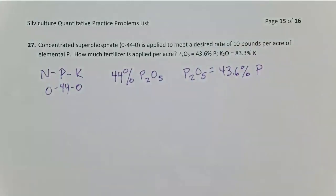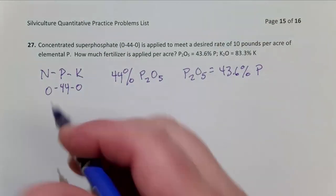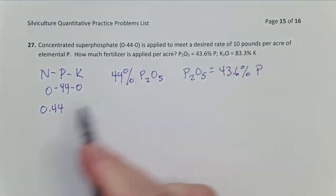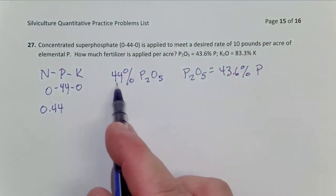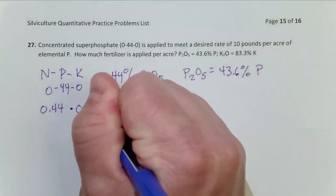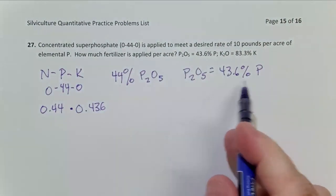And so in order to figure out how much of this fertilizer is actually elemental phosphorus, we have to make this adjustment. So the math to do that is 0.44, expressing this percentage as a fraction by dividing it by 100, move the decimal place over a couple of times, times 0.436. That's this number right here.